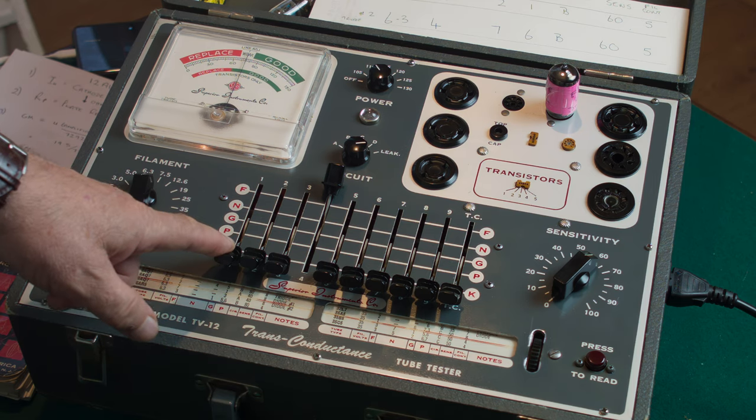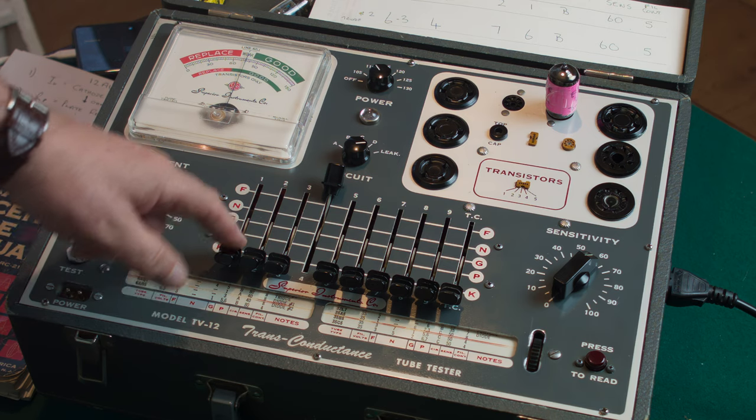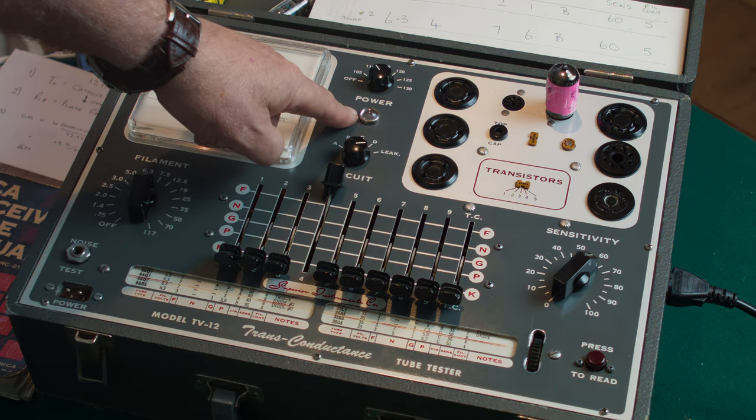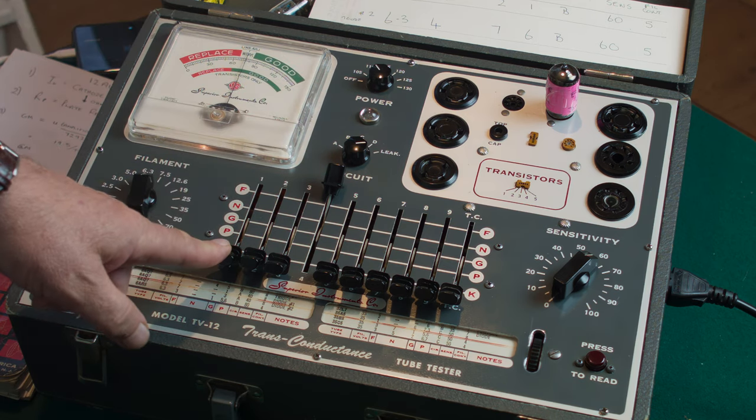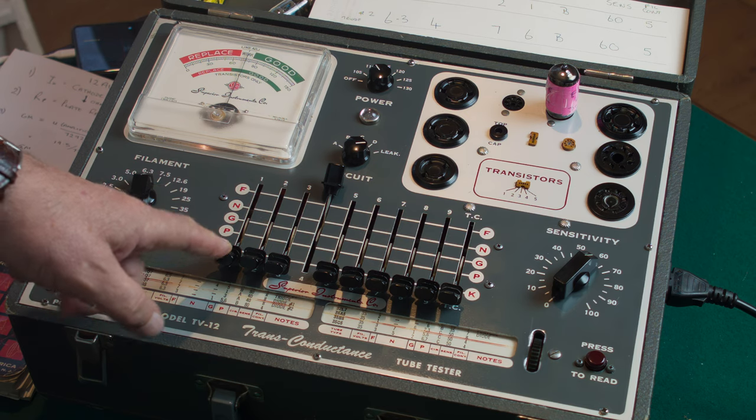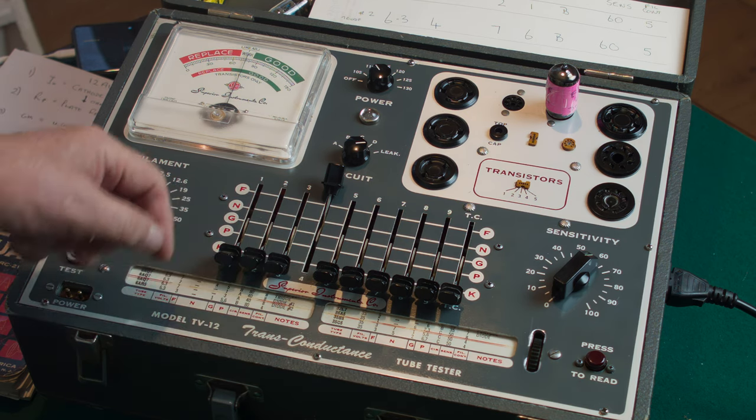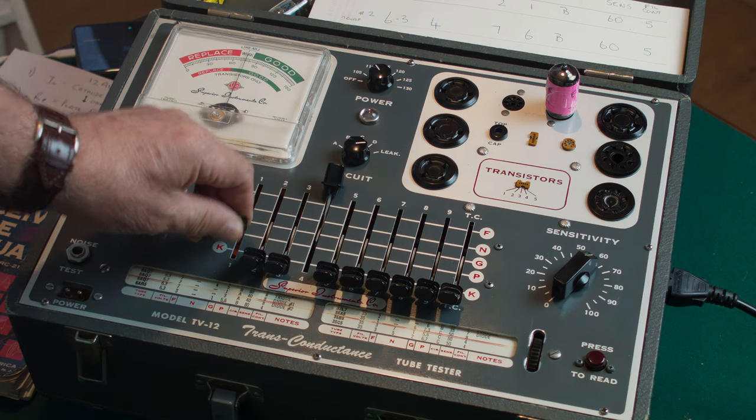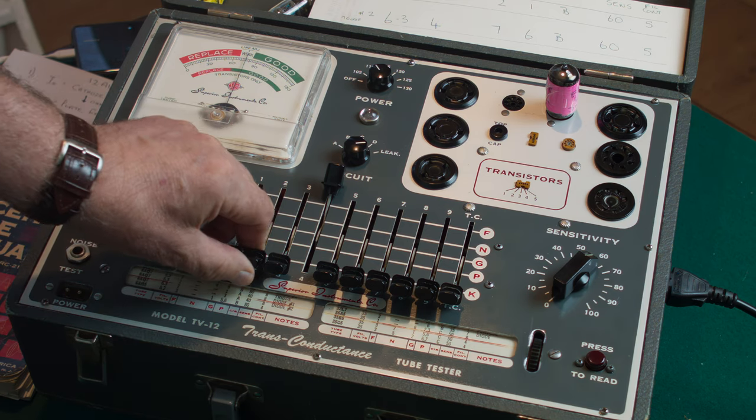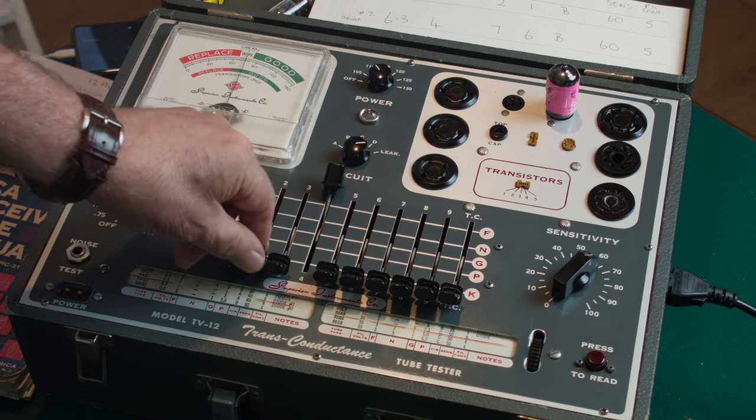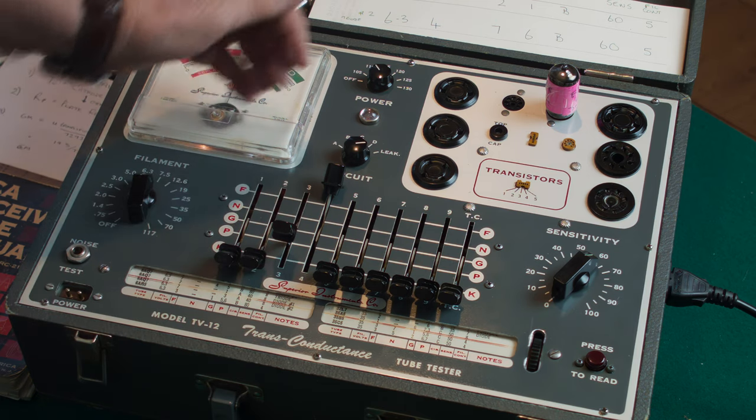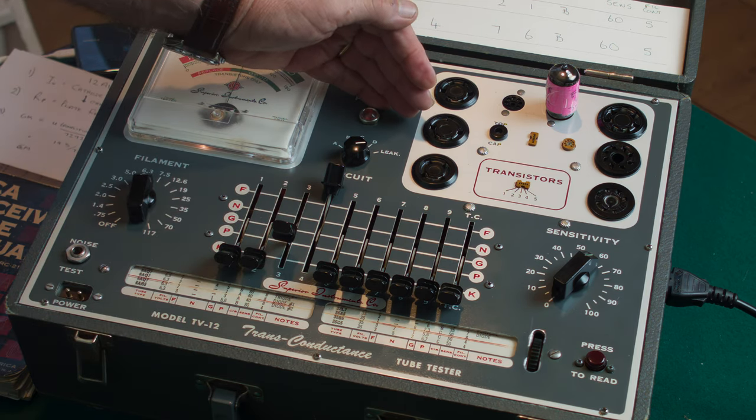All we're going to do is move these levers up one at a time to the P position and down again while watching this neon lamp here. If it glows it'll be a short or leak, but there's another occasion when we move lever five up it will glow but that's only the filament. So number one first, that's clear. Number two. Number three.